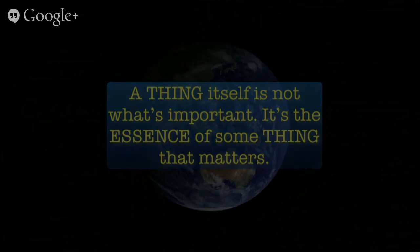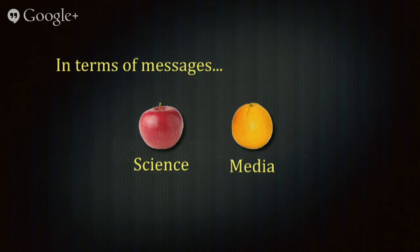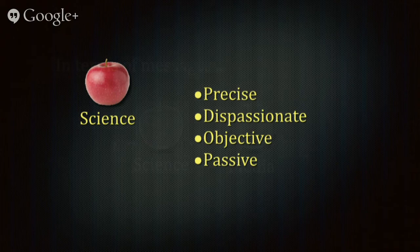Let's talk about how to develop these messages. A thing is not what's important — it's the essence of the thing that matters. When we move into message development, we want to define what our goal is and how to do it. Science and media really are apples and oranges — they have different intentions fundamentally. Science, traditionally, is a precise enterprise. It's dispassionate above all. We want to have a sense of objectivity, remove ourselves from the observations and experiments. When we write the results, we write often in passive voice — something anathema in good writing, but essential in science so the data can speak most loudly and clearly.